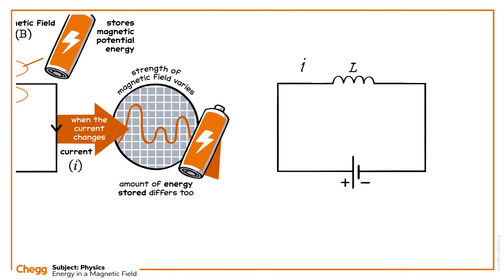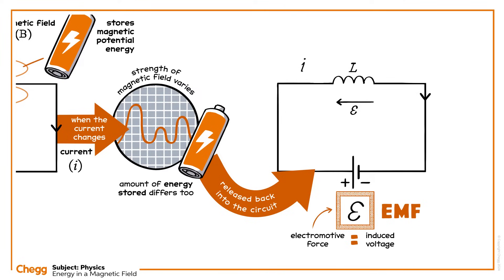The energy from the magnetic field can be released back into the circuit, inducing an electromotive force, EMF, in the conductor. EMF is also known as the induced voltage, and represented by the Greek letter epsilon.